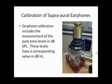Here is a picture of the calibration setup: a 500-gram weight on top of the earphone, which sits on top of a coupler with a microphone inside. The signal goes to a sound level meter and we can measure the sound pressure level in dB SPL. Earphone calibration includes the measurement of pure tone levels in dB SPL, which have a corresponding value in dB HL.